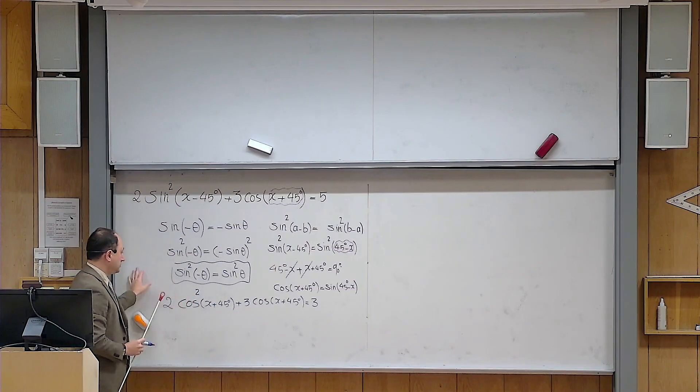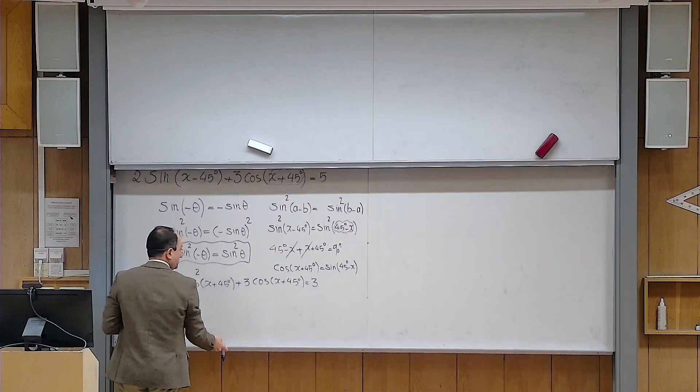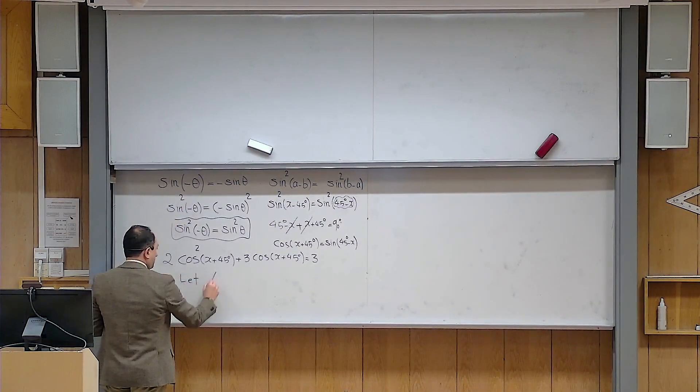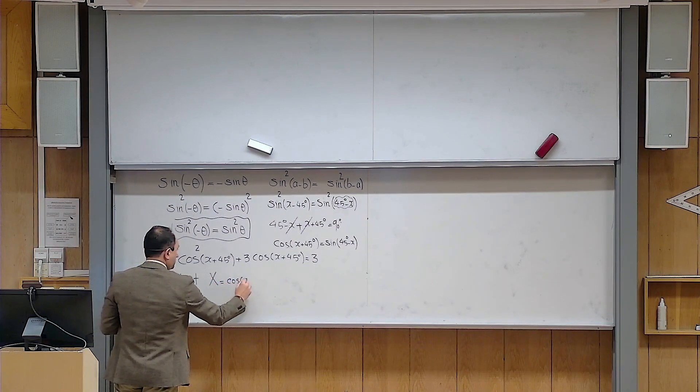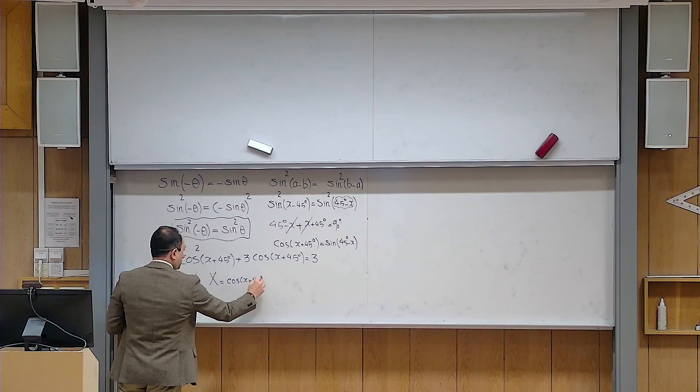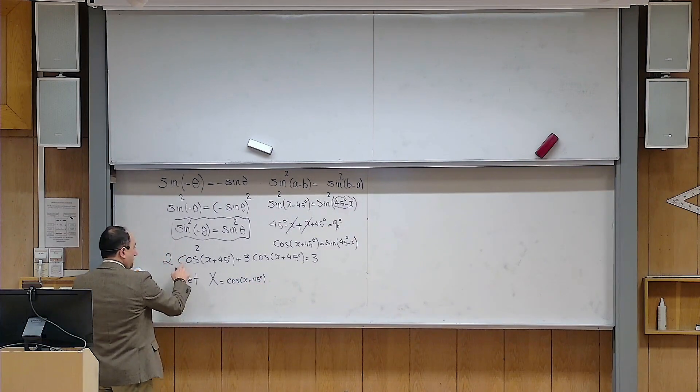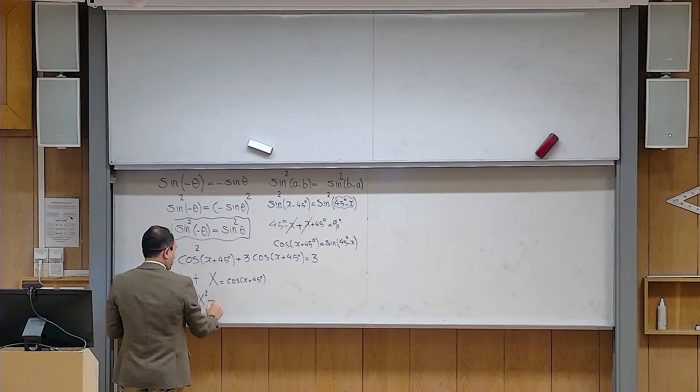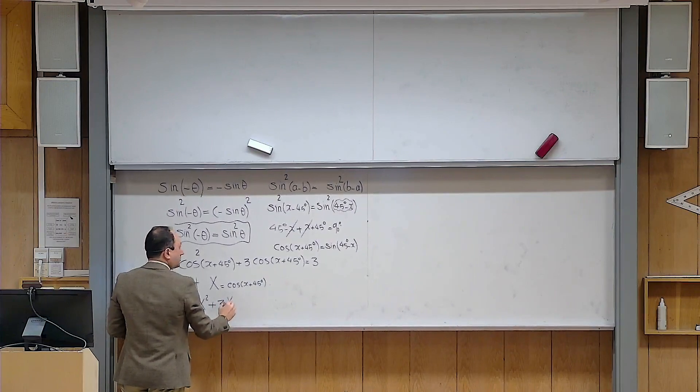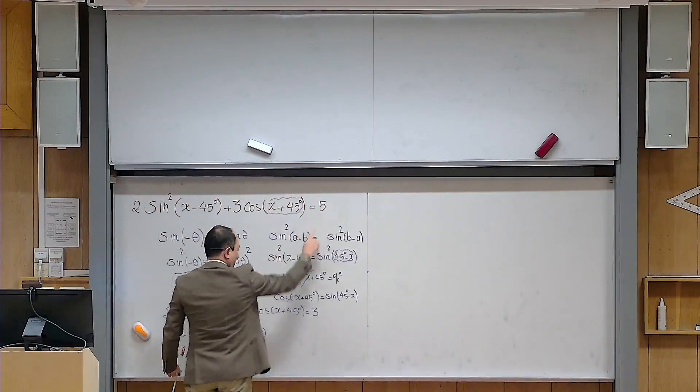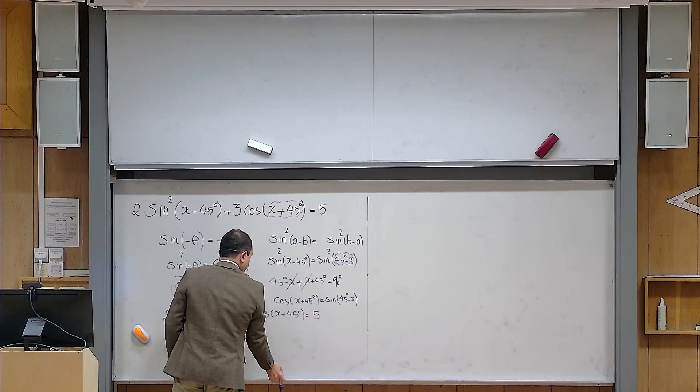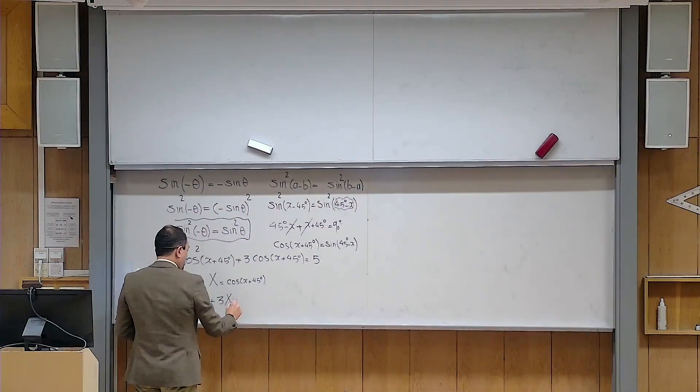And hopefully you know what to do. For example, you can introduce an auxiliary variable here. So you would say let capital X be cosine of x plus 45 degrees. Then what happens? Instead of cosine, I put capital X. So I get 2 capital X squared. And then I will get plus 3X. Oh, sorry, I made a mistake here. This number is 5. I mistakenly wrote 3. So that is 5. And that equals 5.